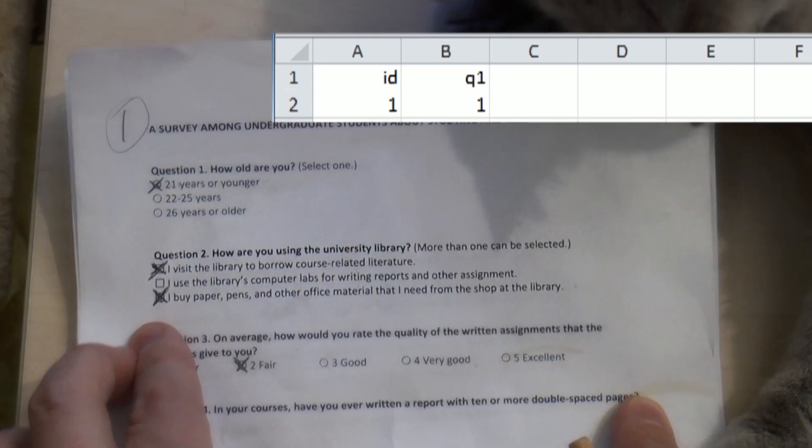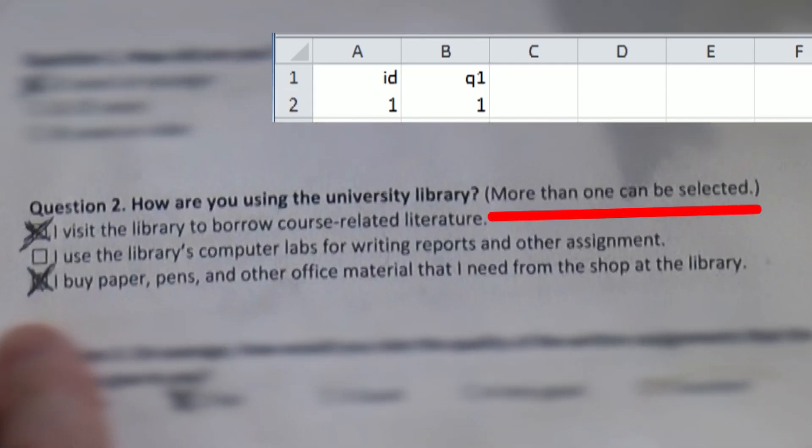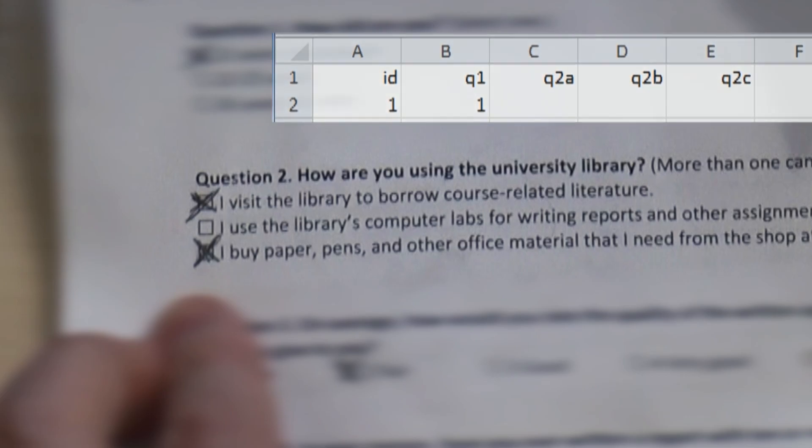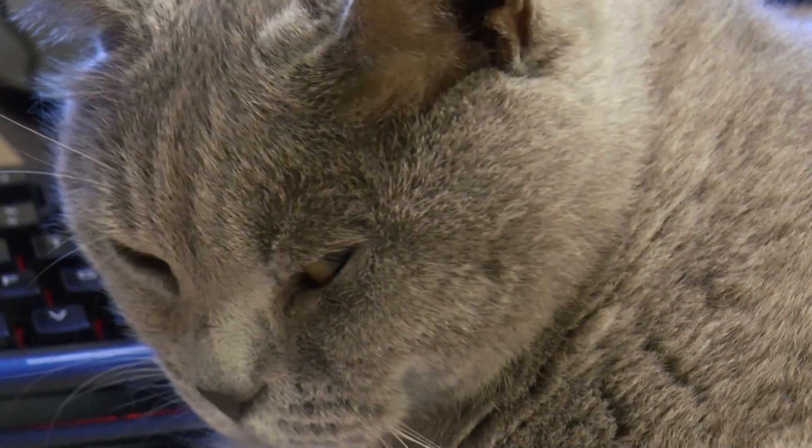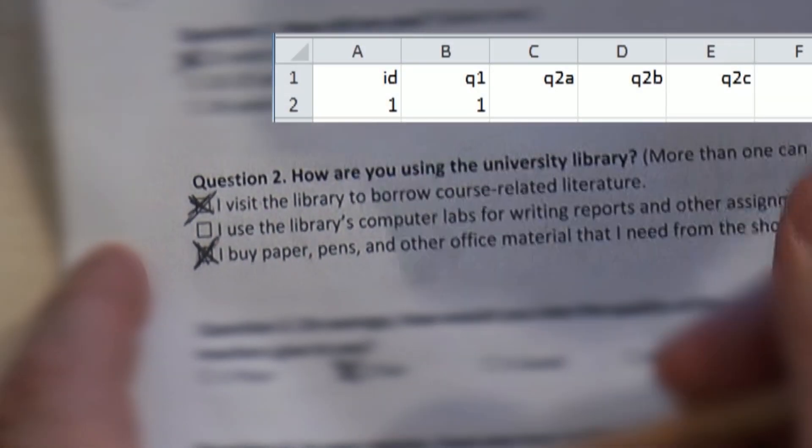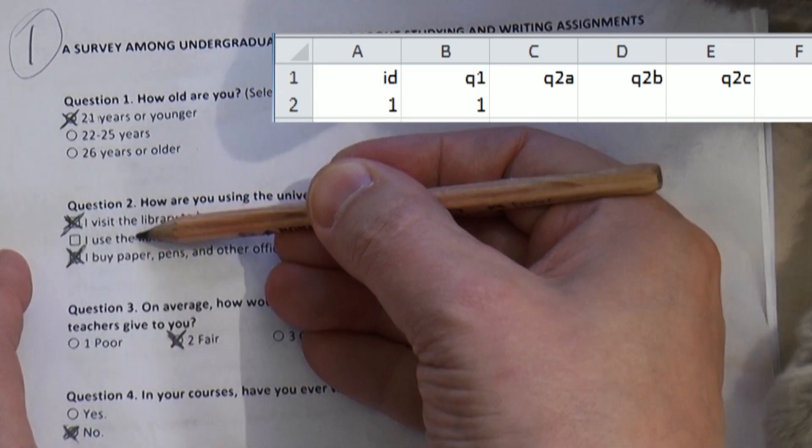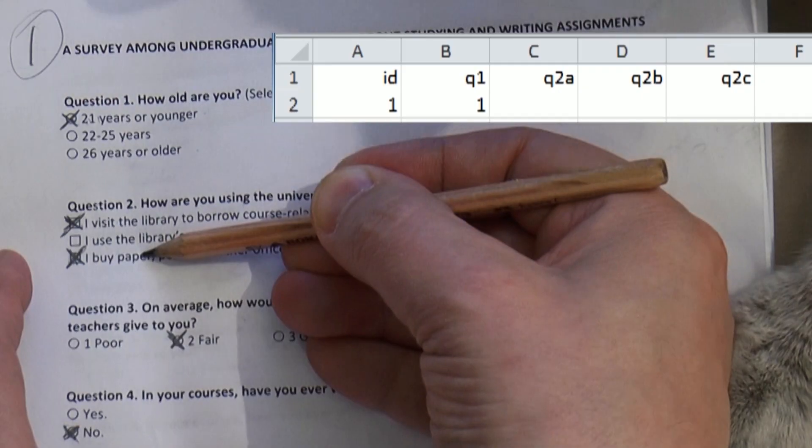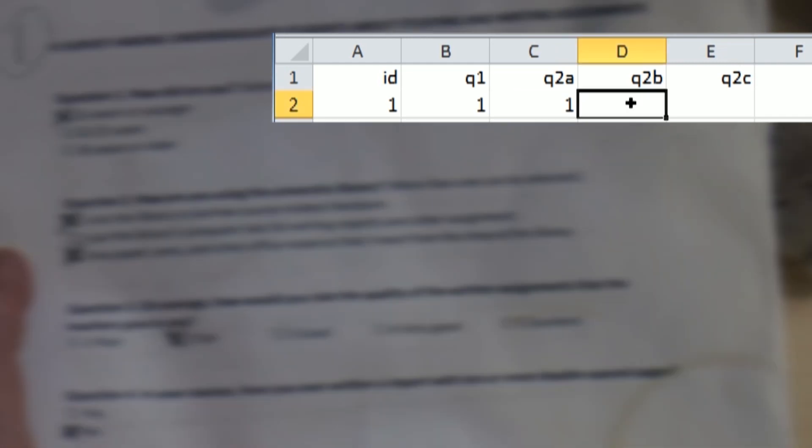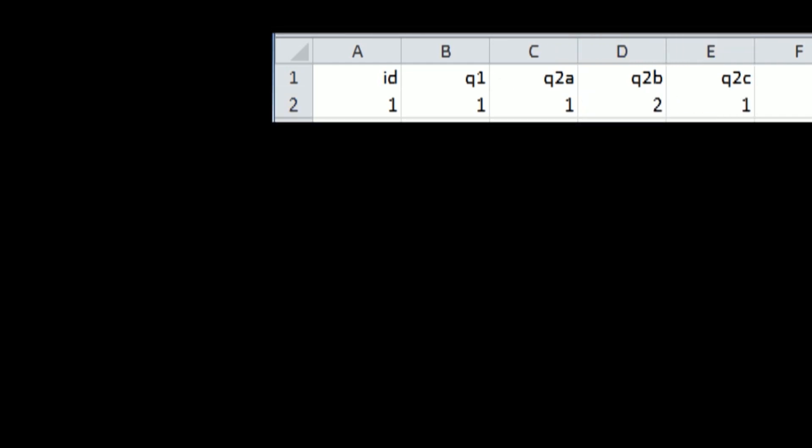Next is question 2, where they could select multiple responses if they wanted. In Excel I give each response its own column: Q2A, Q2B and Q2C. If the participant has checked the box I will write the code 1 in Excel. Otherwise I will write a 2. In this concrete example the respondent has selected the first alternative, left the second one blank and selected the third. Consequently I will put a digit 1 in Q2A, 2 in Q2B and 1 into Q2C.